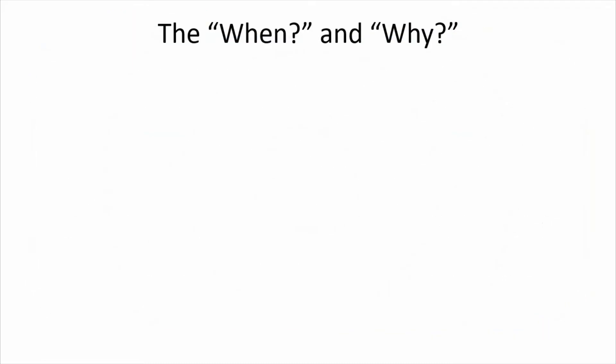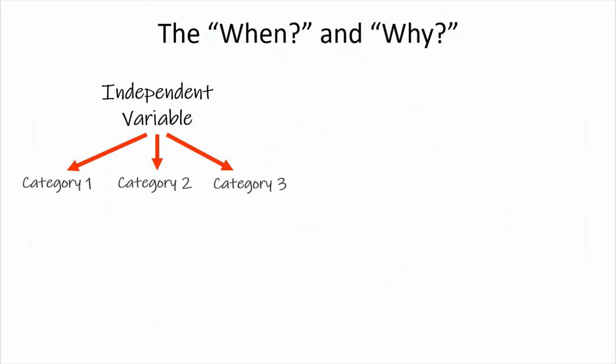First things first, before we run the procedure in SPSS, let's quickly review the requirements of ANOVA by asking ourselves when and why we may need to run ANOVA. ANOVA is used when we have one independent variable with three or more categories and one dependent variable whose attributes are continuous. So that's when. We use ANOVA because we're interested in seeing whether there are differences in the outcome — the dependent variable — and if there are, between which pair of categories the differences are statistically significant. So that's why.